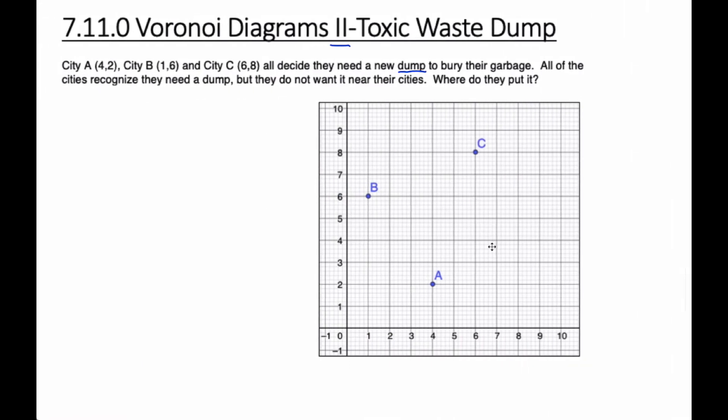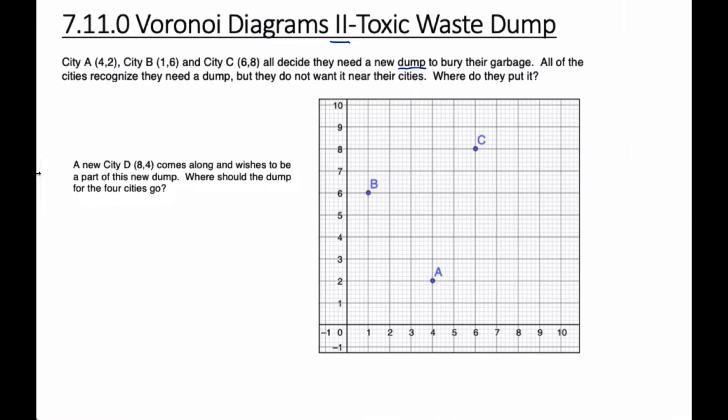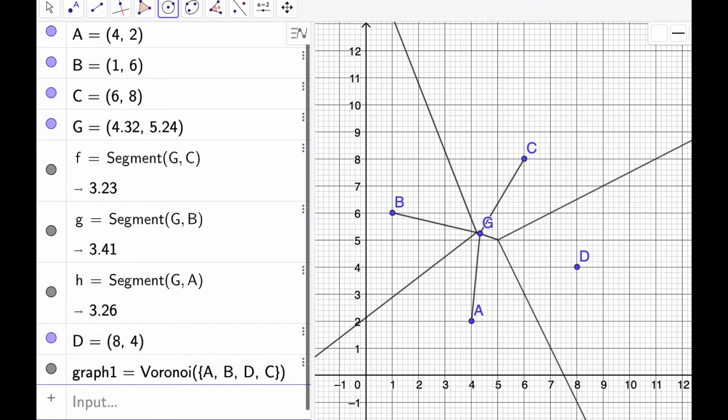But what happens next is there's a new city that comes along at this position. It also wants to be part of this new dump. And so we have four cities to try and find where to put this dump. Well, here is city D. And if I keep on going with this, there's its Voronoi diagram.